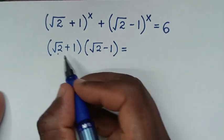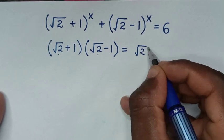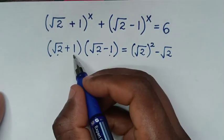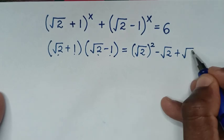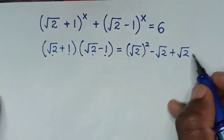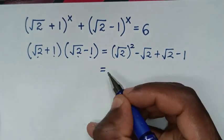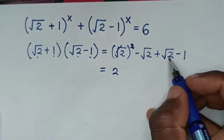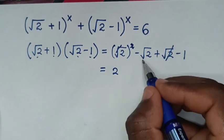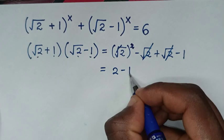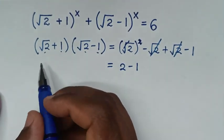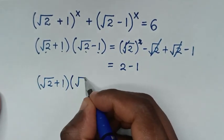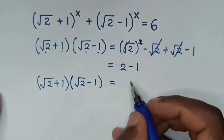Expanding: √2 times √2 is 2, √2 times −1 is −√2, 1 times √2 is +√2, and 1 times −1 is −1. So the −√2 and +√2 cancel, leaving 2 − 1 = 1. Therefore (√2 + 1)(√2 − 1) = 1.